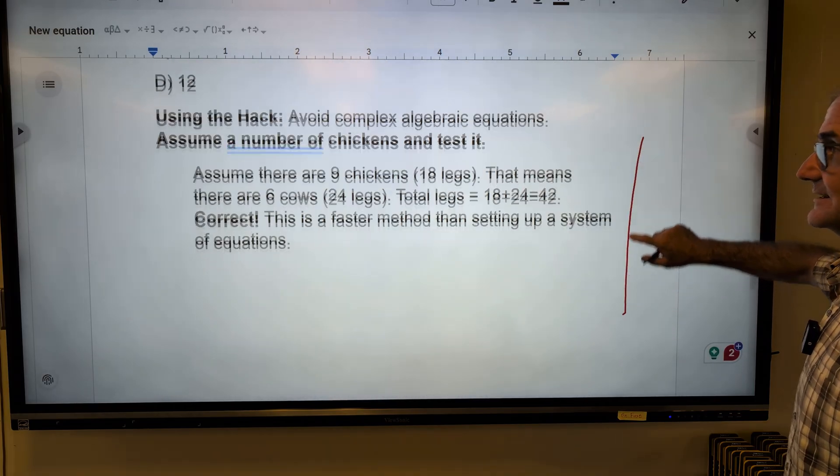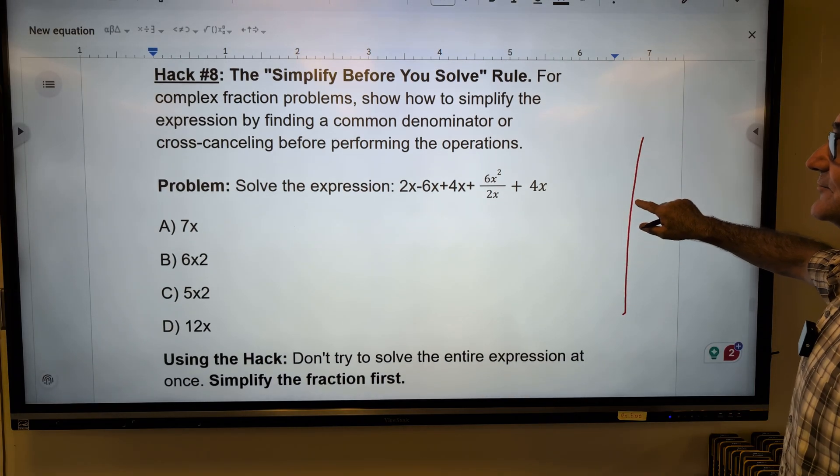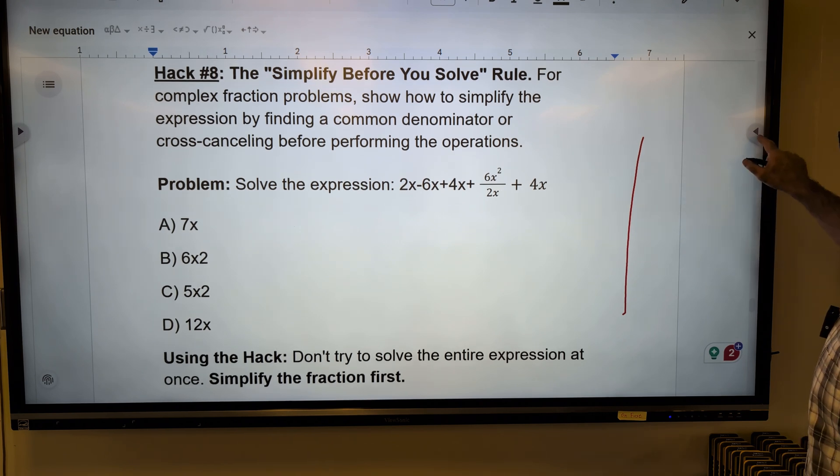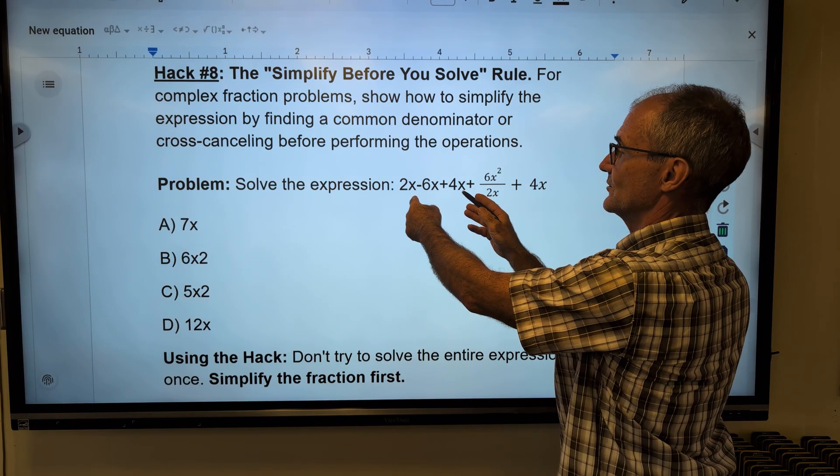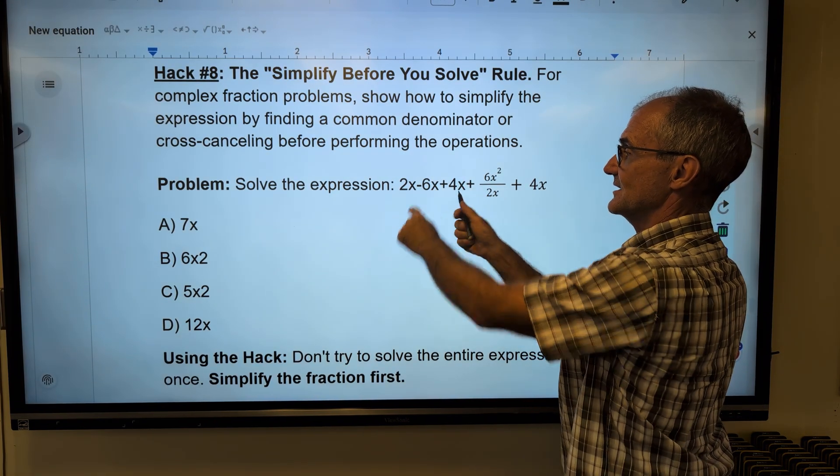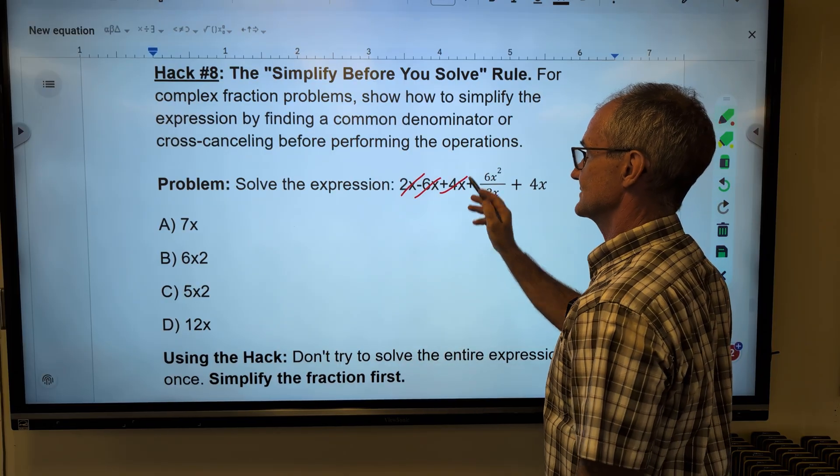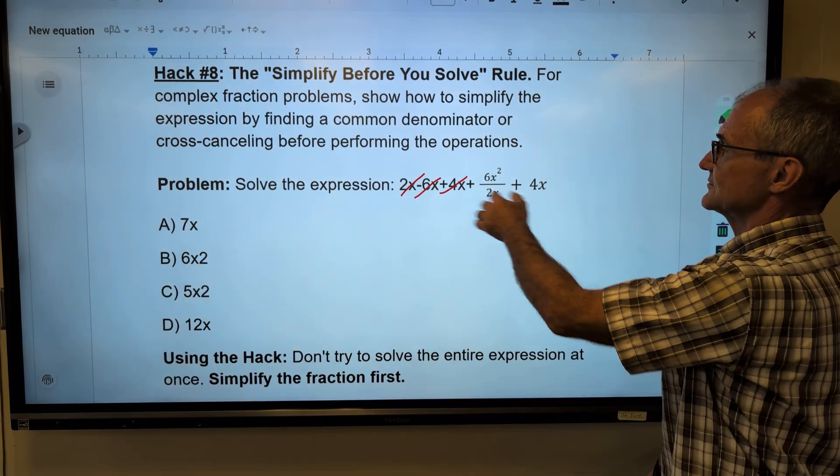Okay, hack number eight. Simplify before you solve. So I have this equation right here. Well, two-x minus six-x plus four-x. Well, two-x and four-x is six-x. Six-x minus six-x. Those all cancel. Then here I could reduce. I want to reduce before I solve.